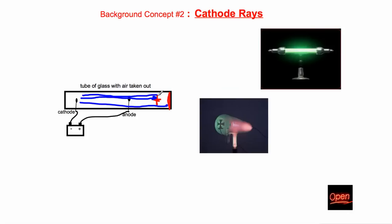They had no idea what these things were, but the conclusion from the shadow was that whatever it was, it wasn't just all over the place — it was definitely shooting from the cathode over to the other end. Because they didn't know what they were, they called them cathode rays, because they came from the cathode. This was an interesting discovery that merited further looking into. In the late 1800s, all that was known was how to make them and give them a name, but not much more about their nature.